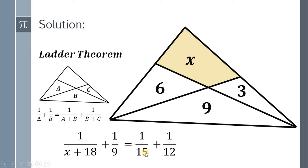Now, simplify. 1 over 15 plus 1 over 12 will give us 3 over 20. Then minus 1 over 9 both sides, we have 3 over 20 minus 1 over 9 will give us 7 over 180. So we have 1 over x plus 18 is equal to 7 over 180.